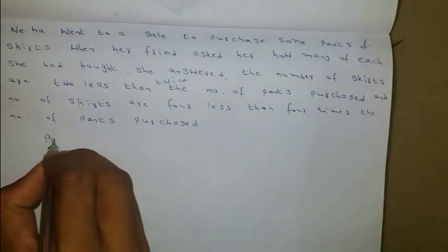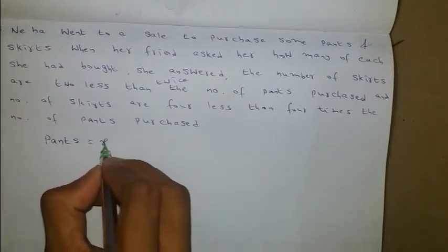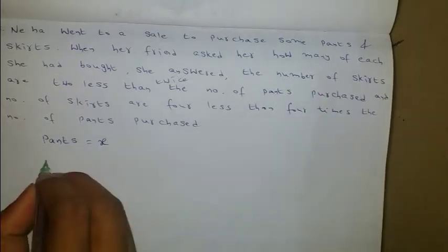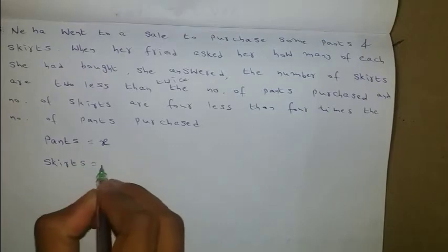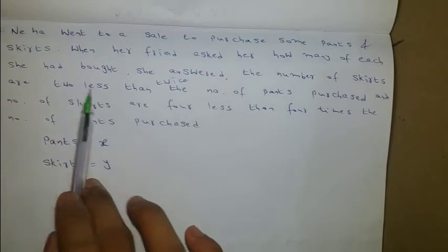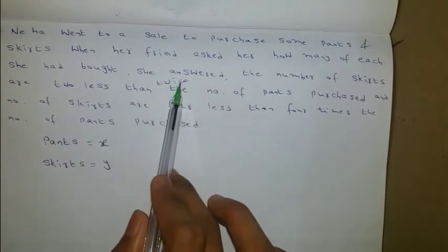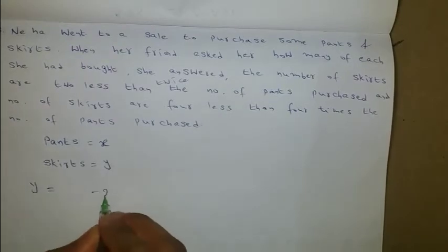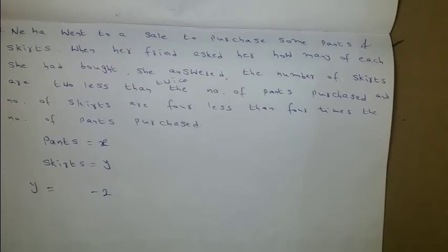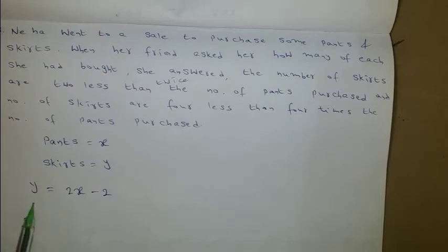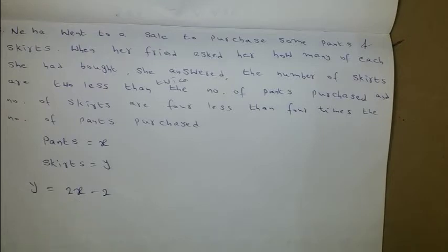I am taking pants as some constant x and skirts as another constant y. The number of skirts are two less than twice the number of pants, so y equals 2x minus 2. That is the first equation.